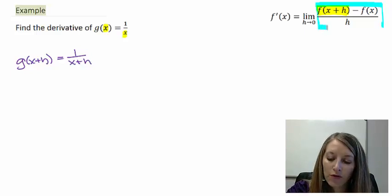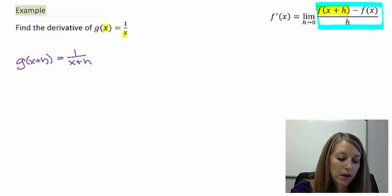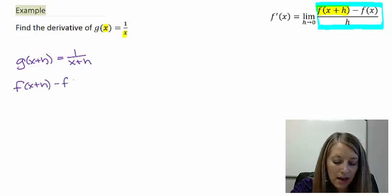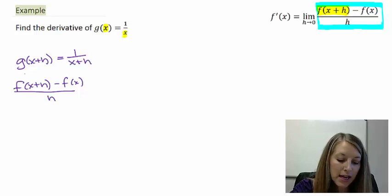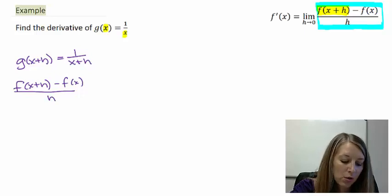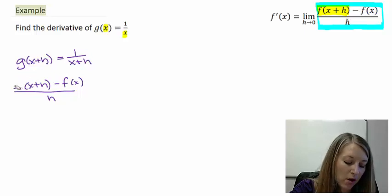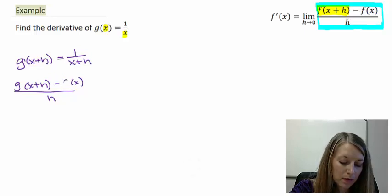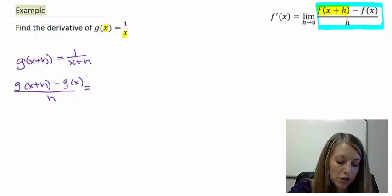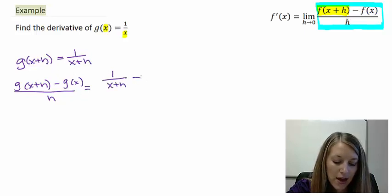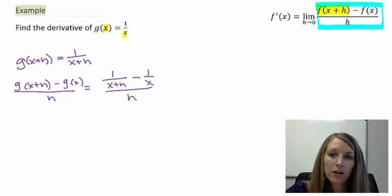And that is this whole fraction here called the difference quotient. So we want to simplify f of x plus h minus f of x all over h. But instead of saying f of x plus h and f of x, we would use g's here because we are talking about our g function instead of an f function. So our g of x plus h is 1 over x plus h minus our g of x is the original function, 1 over x. And that is all over h.